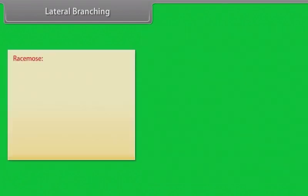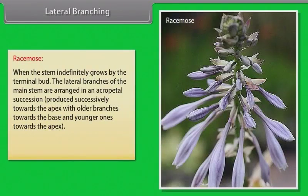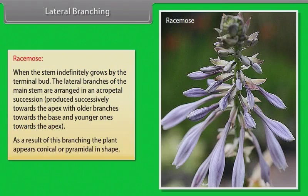In racimose branching, the stem indefinitely grows by the terminal bud. The lateral branches of the main stem are arranged in acropetal succession, produced successively towards the apex, with older branches towards the base and younger ones towards the apex. As a result of this branching, the plant appears conical or pyramidal in shape.